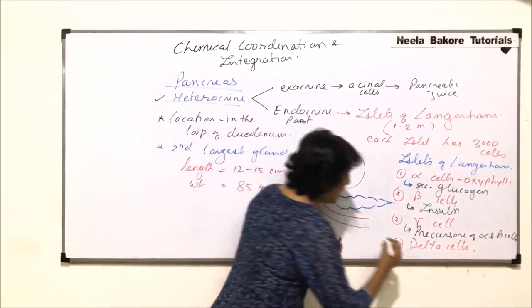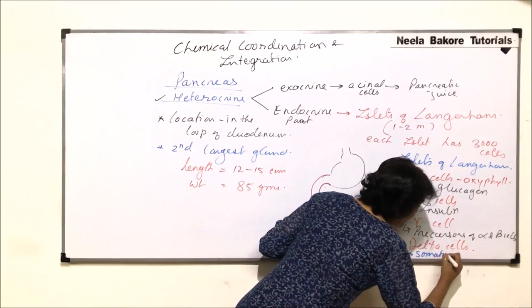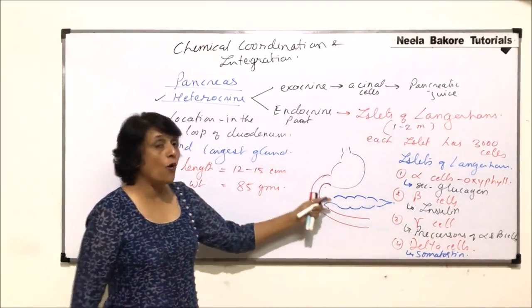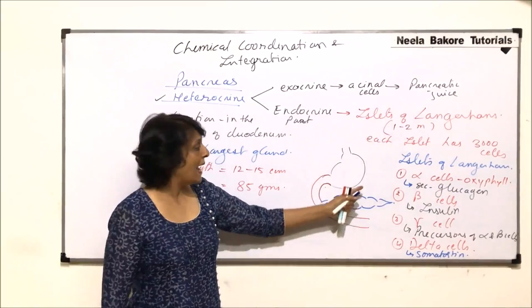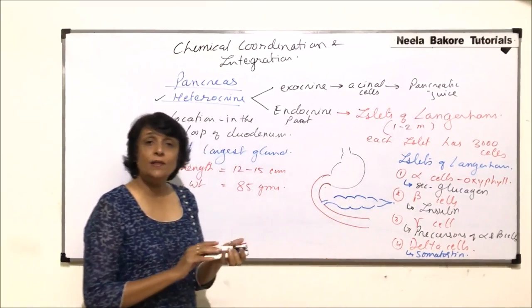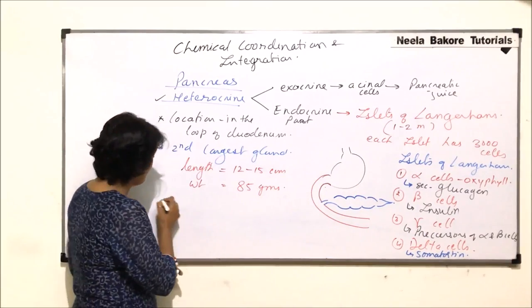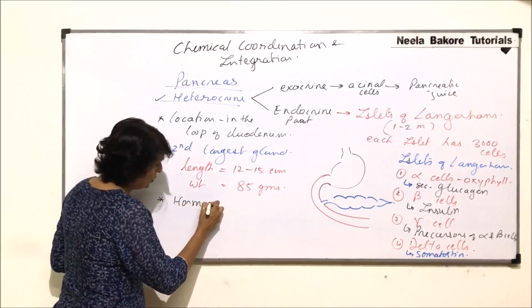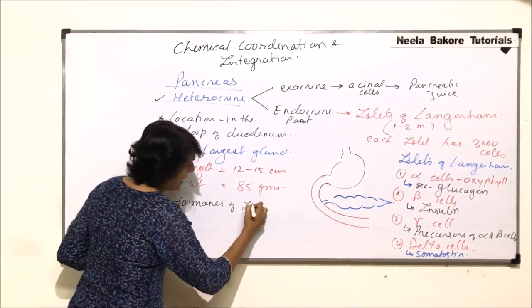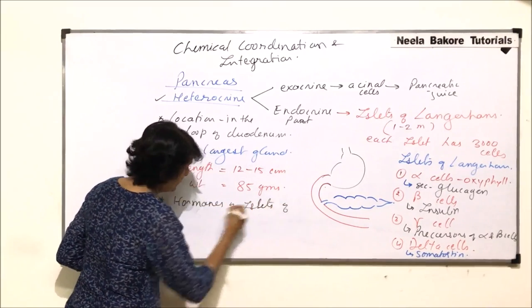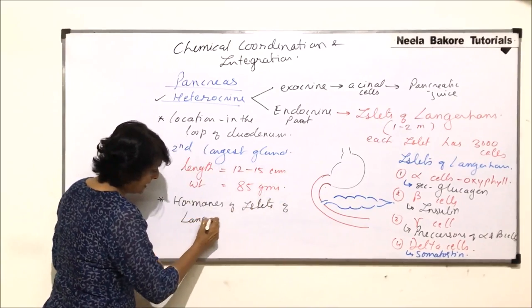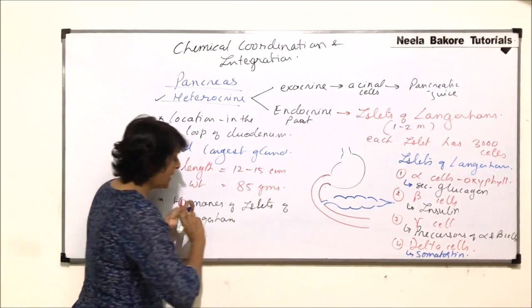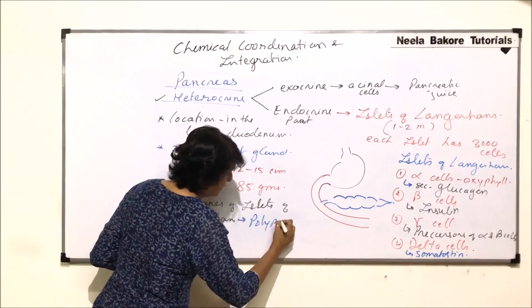Delta cells secrete somatostatin. So these are the four main cells which are present and their function. All these hormones produced by pancreas or islets of Langerhans are polypeptide hormones. They are all polypeptide.